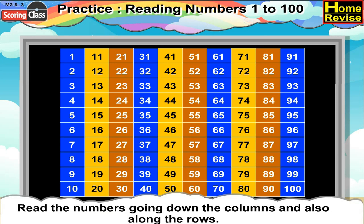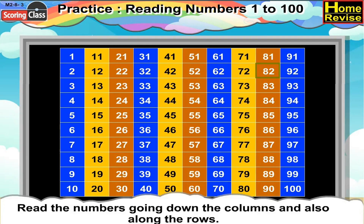Now, the next row begins with 2. If you add 10 to it, you will get 12, which is the next number. Then, if you add 10 to it, you will get 22, which is the third number of this row. And after that, similarly, it is 32, 42, 52, 62, 72, 82, 92.